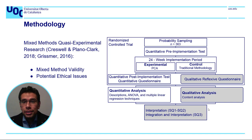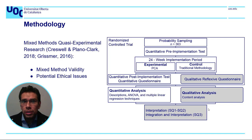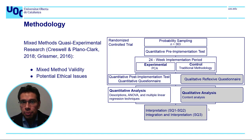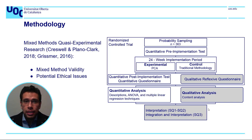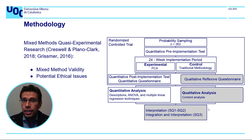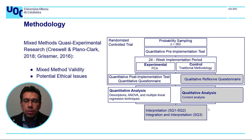Descriptive and inferential statistics — including ANOVA and similar techniques — will be the data analysis methods for the quantitative approach, and content analysis for the qualitative approach. Integrated results will be presented in joint displays. The population will be students in the eighth cycle of the basic education career at UNAE. An identical sample will be selected for both approaches using one-stage cluster probability sampling, since units of analysis are grouped in courses, with courses chosen via simple random sampling.